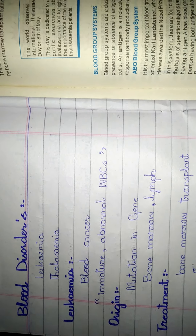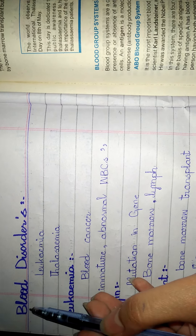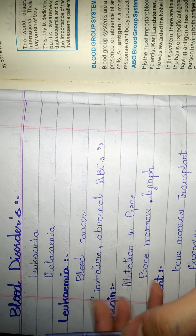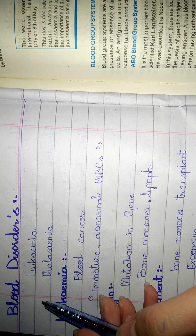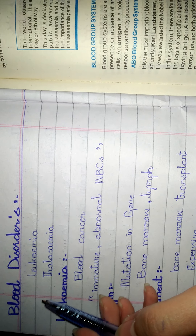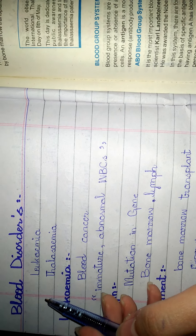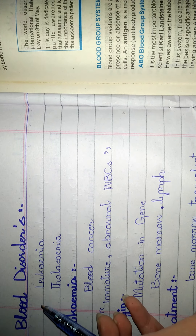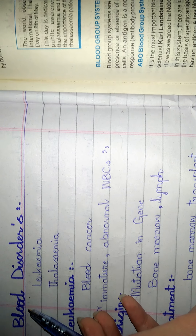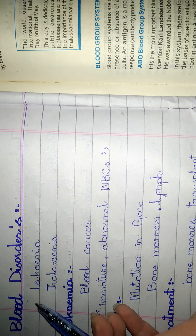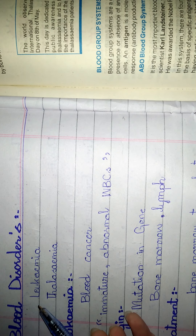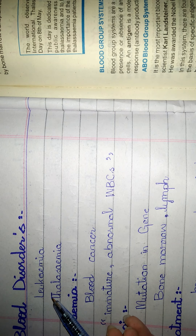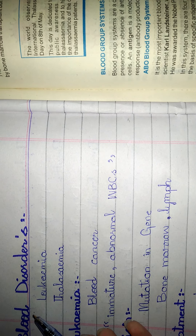Assalamualaikum guys. Today I will present about blood disorders. We have read about the constituent parts and how they are present in our body and in what amounts. Now we will discuss the blood disorders. Every body contains blood but it can be diseased. In such situations we can say this is leukemia or thalassemia — these two types are diseases which belong to blood disorders.